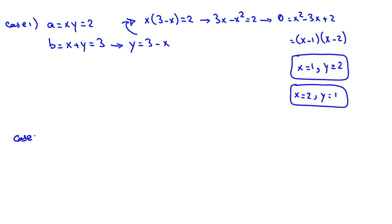Let's consider case 2. In case 2, a equal to xy equal to 3, and b equal to x plus y equal to 2. Here again, we can say y equal to 2 minus x. We replace y with 2 minus x here equal to 3.